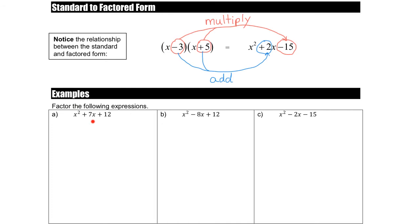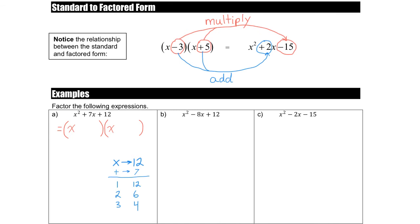For this first example, x squared plus 7x plus 12, we want to turn this into factored form, which means we'll end up with two brackets each containing an x. We just have to figure out what numbers go in the brackets using this pattern: the numbers multiply to the number on the end — so they must multiply to positive 12 — and they need to add to positive 7. Listing factor pairs of 12: 1 times 12, 2 times 6, 3 times 4. The pair 3 and 4 works: 3 times 4 is 12 and 3 plus 4 is 7. So we place those into our brackets, and that is the factored form.